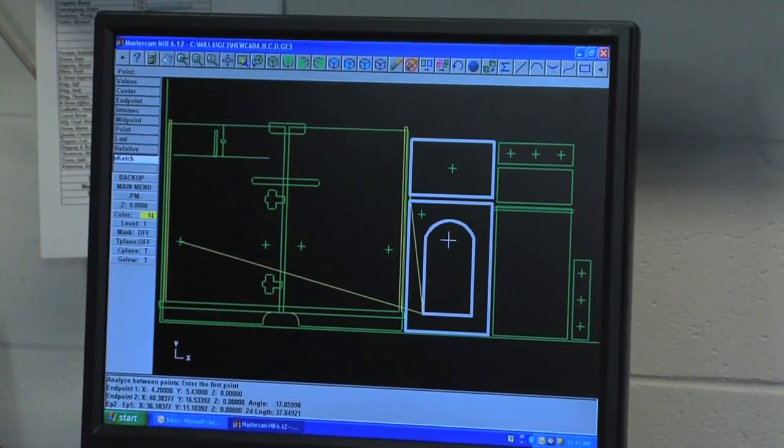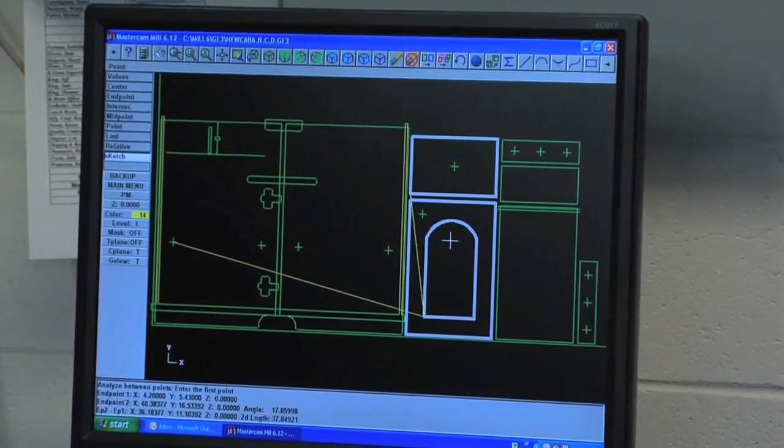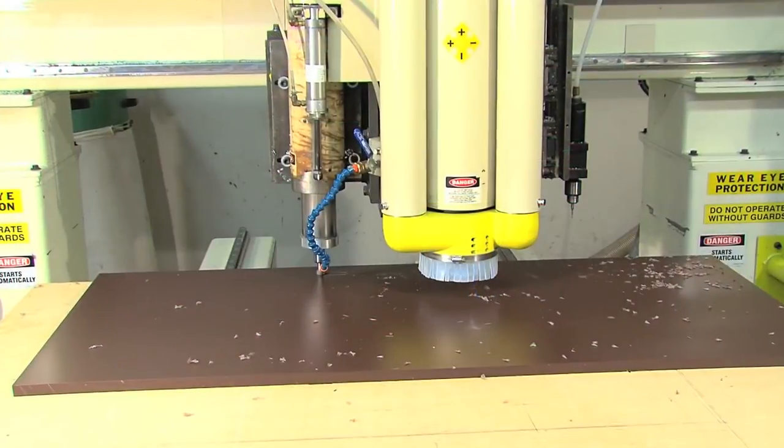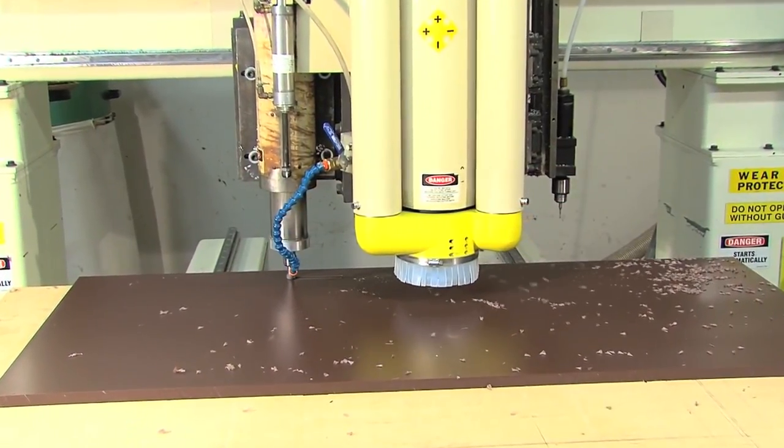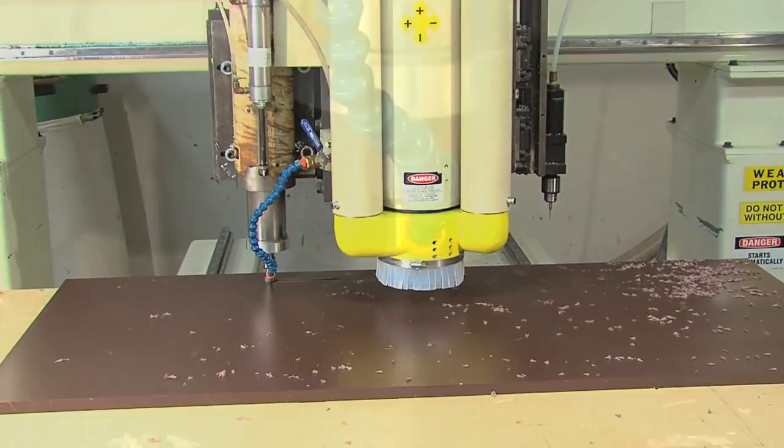King Starboard ST can be routed with handheld and CNC routers. CNC routers turn your CAD drawings into beautifully finished doors and trim quickly and efficiently.